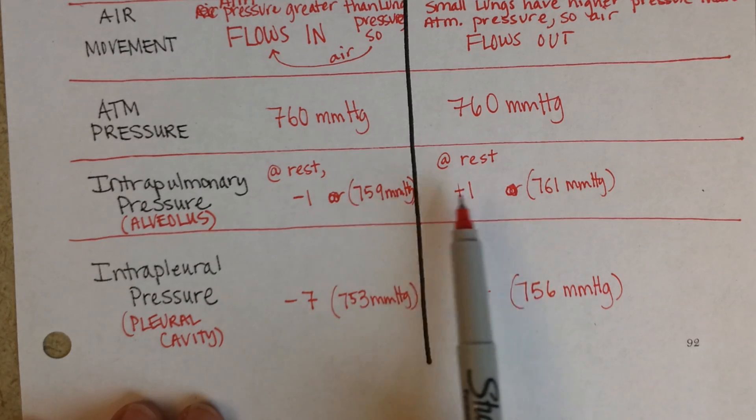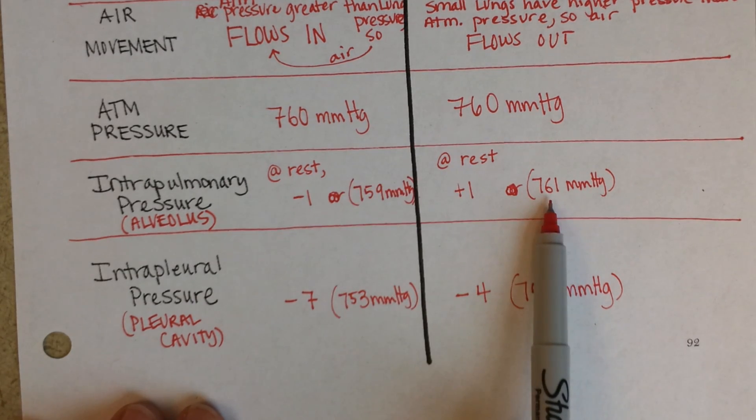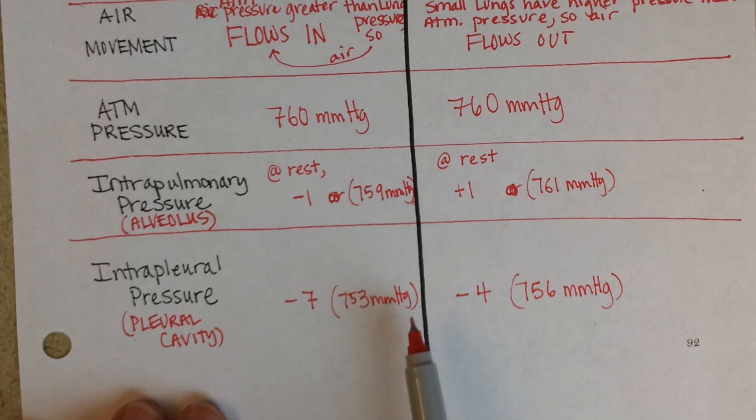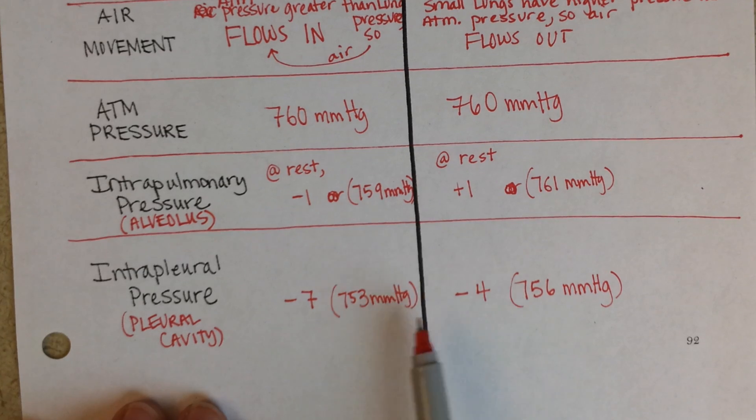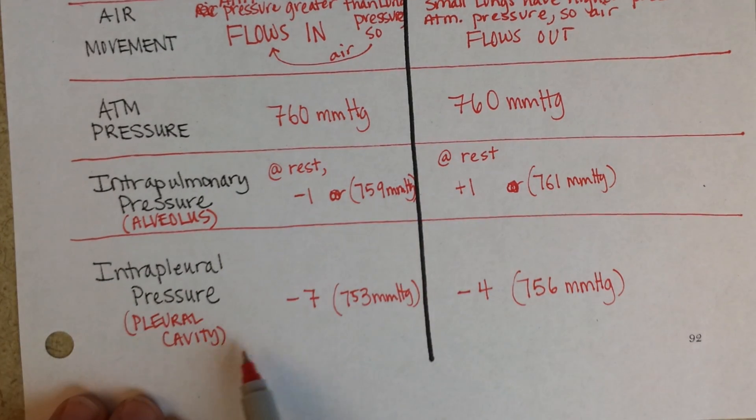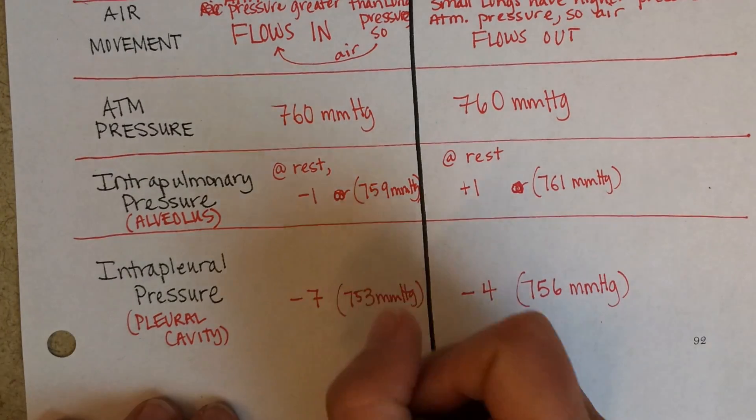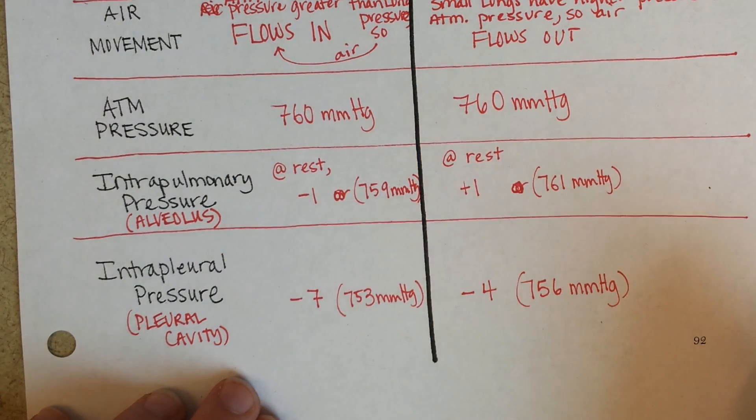And then breathing in, breathing out, and then looking here too. The parietal and visceral pleura are separated with some fluid. And the pressure in them goes from down to 753, up to 756. Down to 753, up to 756. So you get this back and forth. And if it weren't for this always negative intrapleural pressure, the lungs would be collapsed.